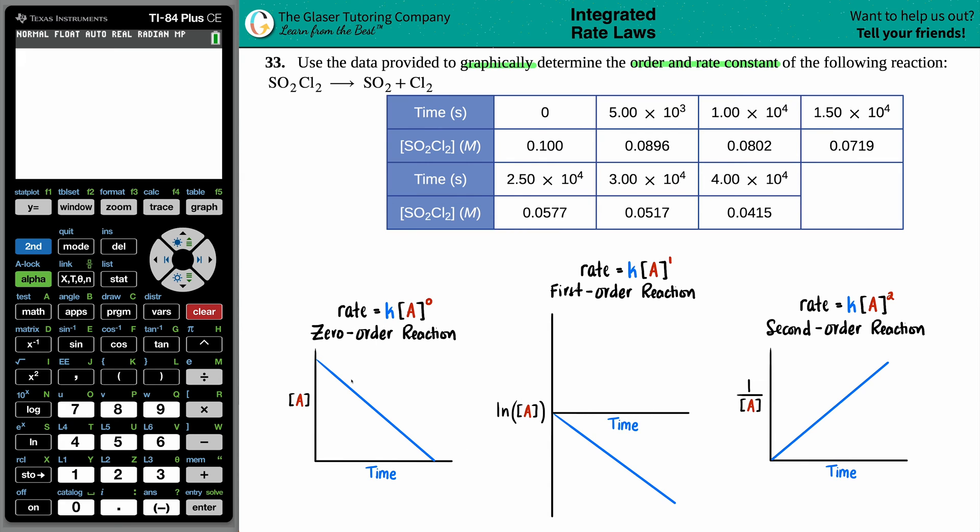Zero order reactions are when you plot your concentration versus time. Now your concentration is going to be the y-axis and here's all the concentration values. There are seven of them. So this is going to be part of the y-axis and the time is going to be always the x-axis. If it's zero order, that means that if I just plot that concentration per time, I should get a straight negative line.